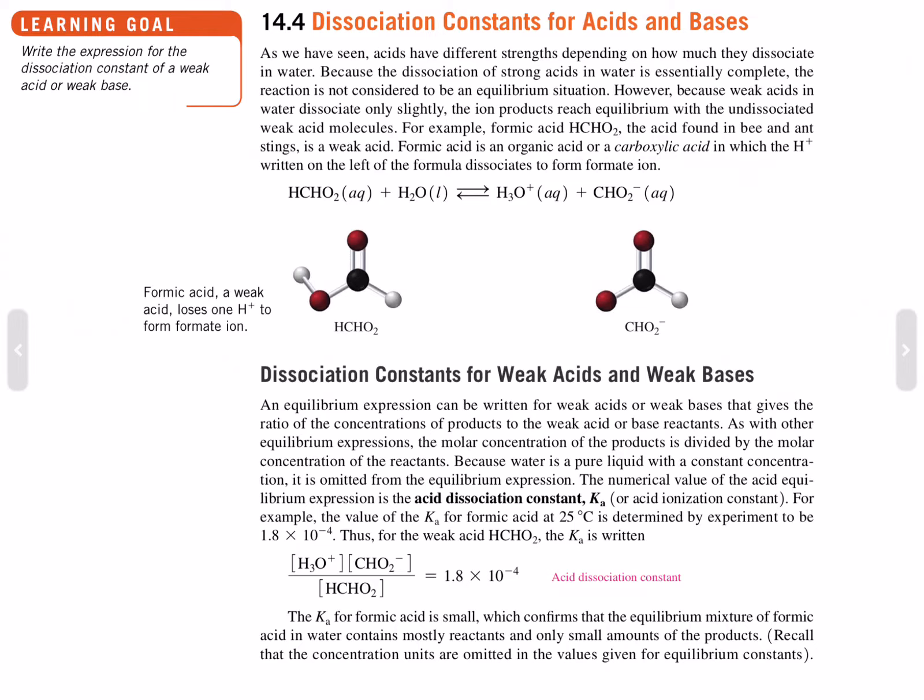The K sub A for formic acid is small, which confirms that the equilibrium mixture of formic acid and water contains mostly reactants and only a small amount of products. Recall that the concentration units are omitted in the values given for equilibrium constants.